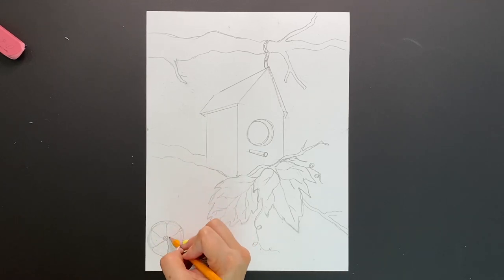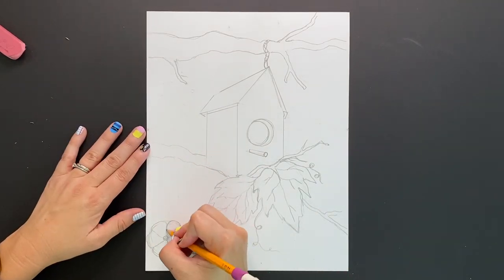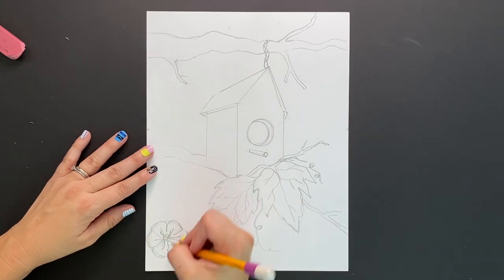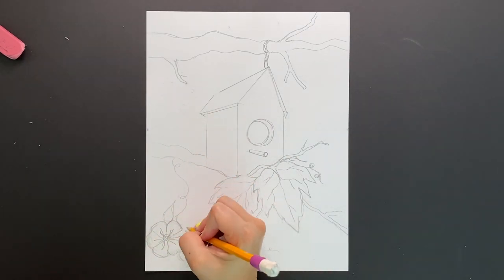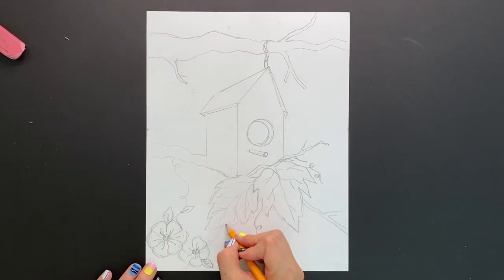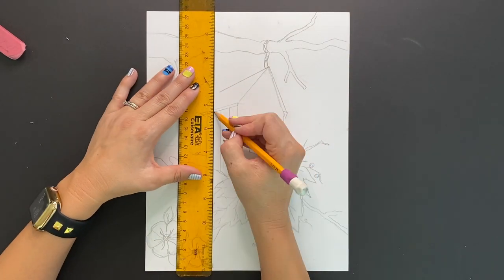Draw vertical lines going down to create a post in the ground. Don't forget to be creative and add some decorative details and elements to make your birdhouse really stand out.